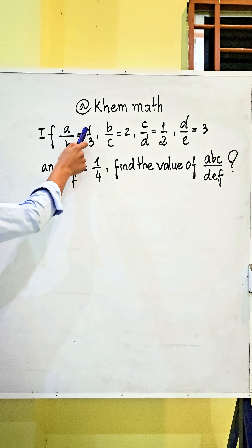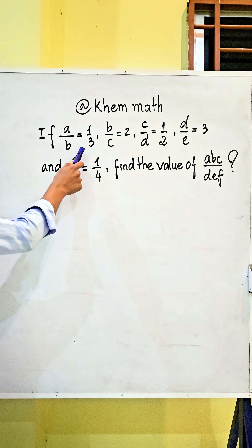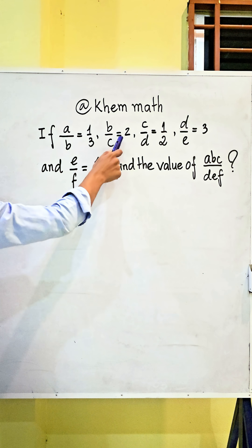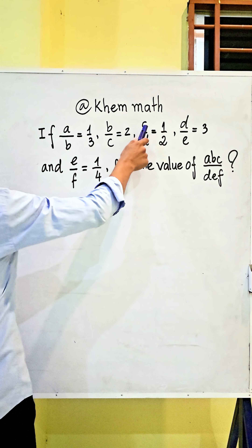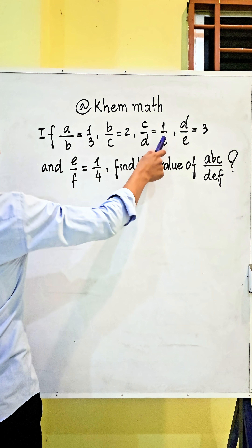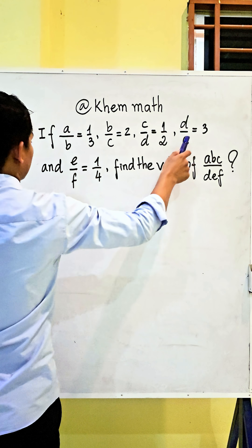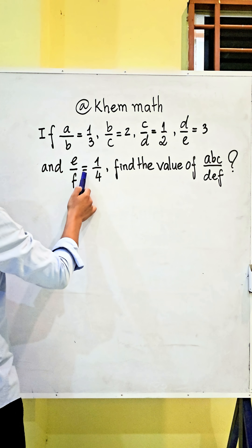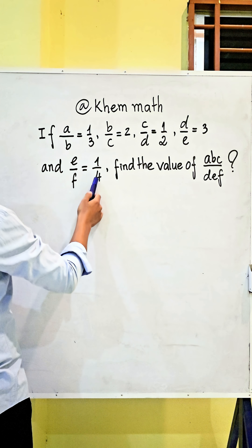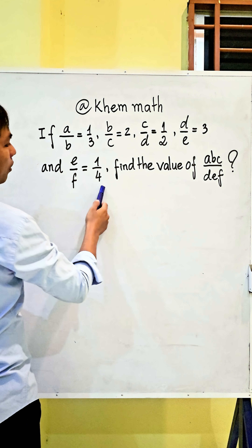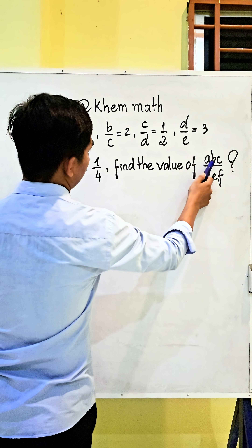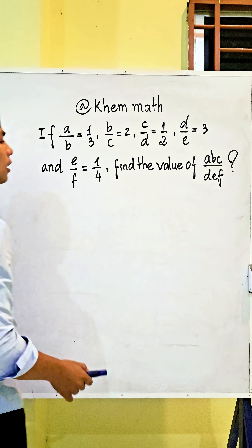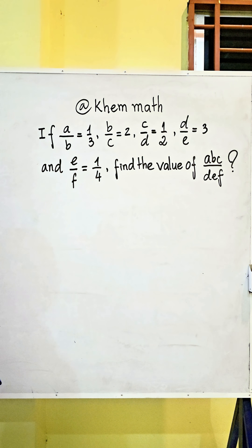If a divided by b equals 1 divided by 3, and b divided by c equals 2, c divided by d equals 1 divided by 2, d divided by e equals 3, and e divided by f equals 1 divided by 4, we find the value of abc divided by def.